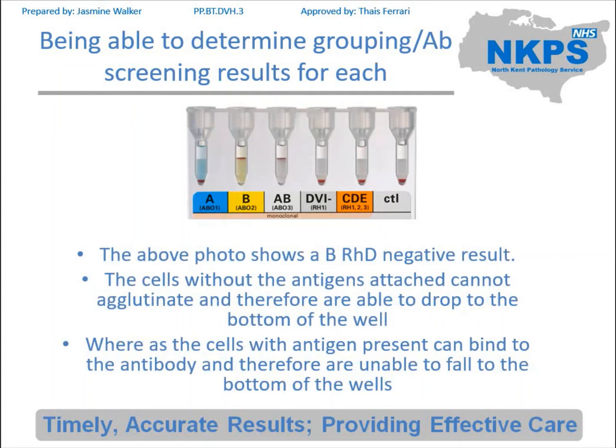Next we're going to move on to the column agglutination technology. This one is a baby card so it's not got a reverse group on it, but the patient is B negative. So again the A is negative, the B is strongly positive, the AB is strongly positive, and the D is negative.